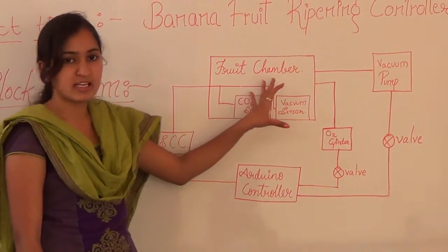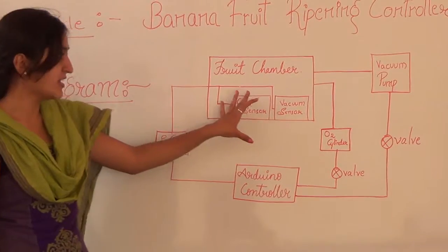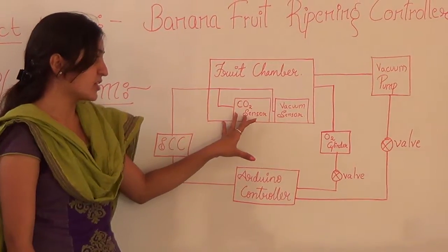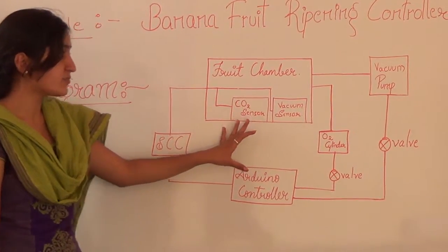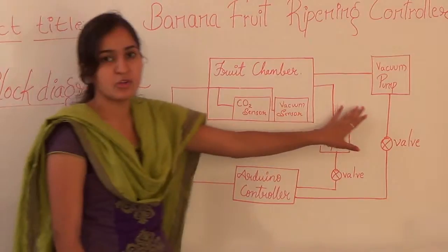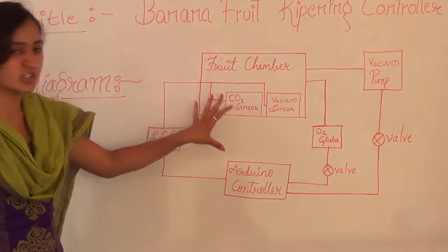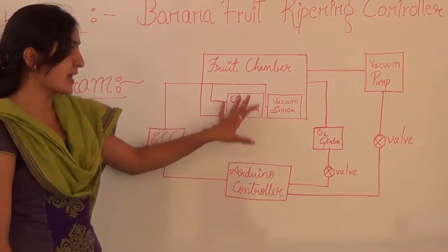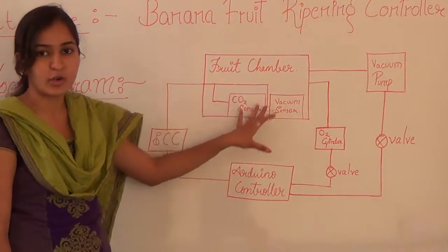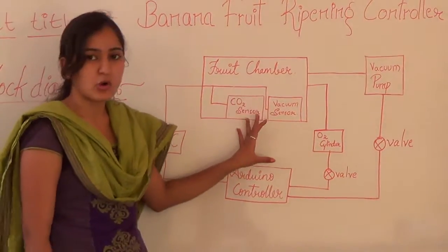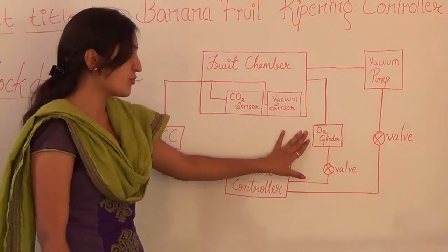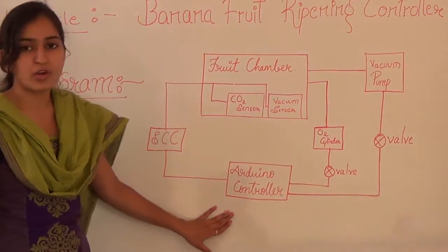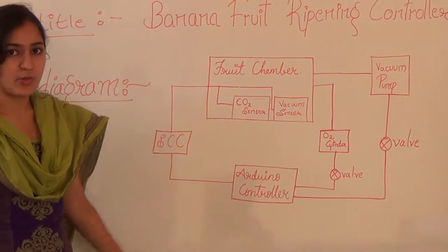When ethylene gets multiplied when it comes in contact with carbon dioxide, we have used a vacuum pump to vacuumize the chamber so that carbon dioxide does not come in contact with ethylene. To maintain the quality of the fruit, we are using oxygen. An Arduino controller is used to automate the system.